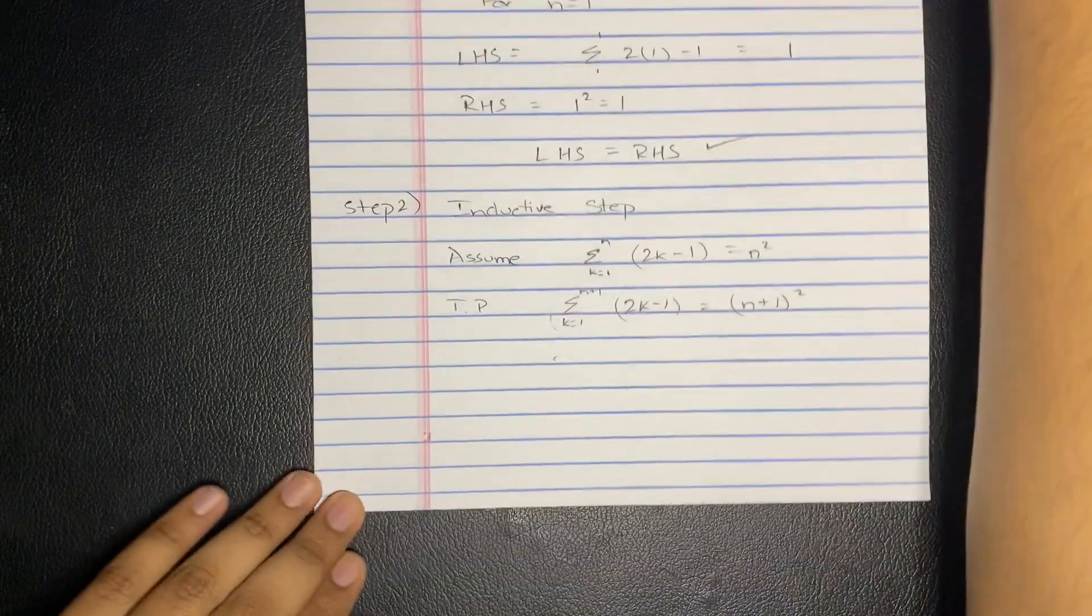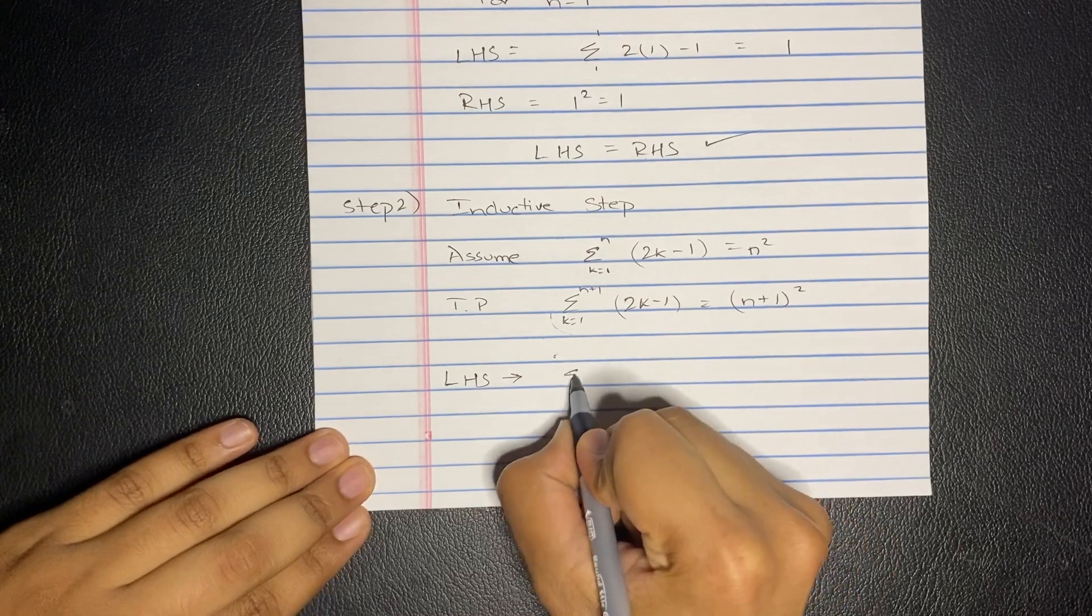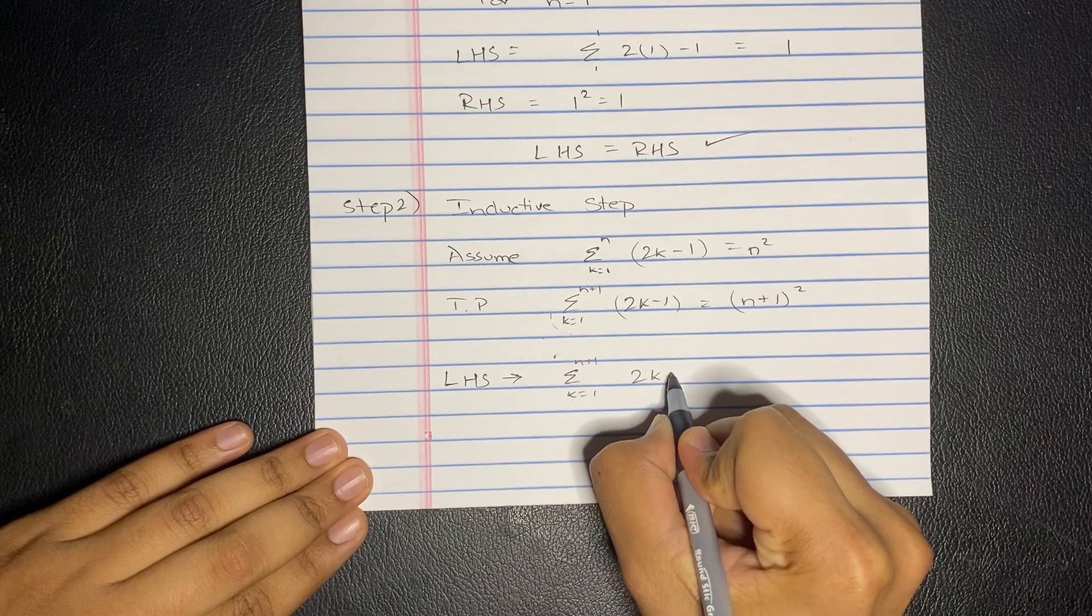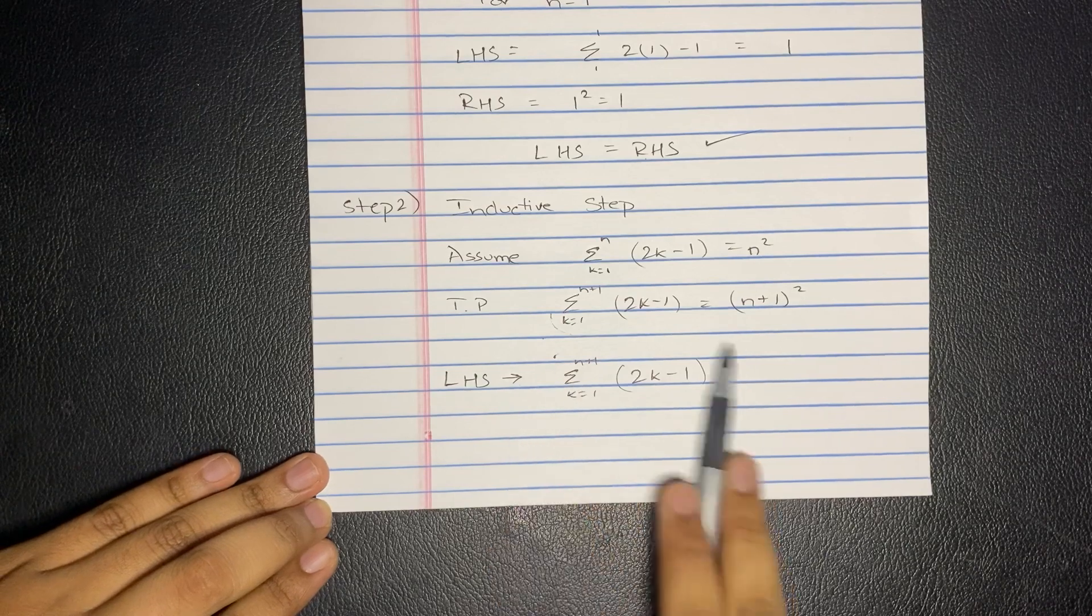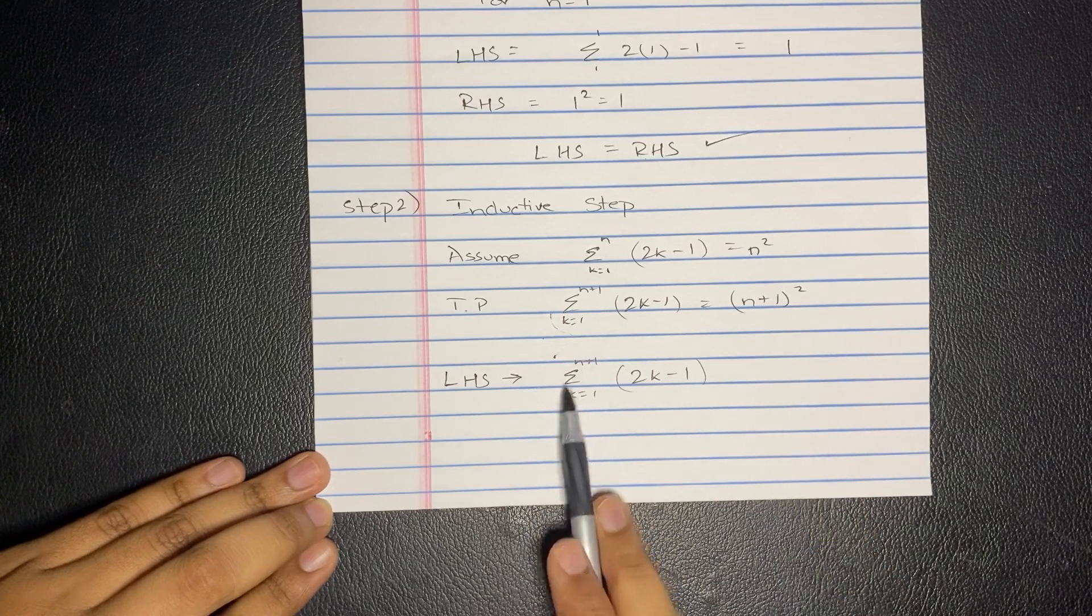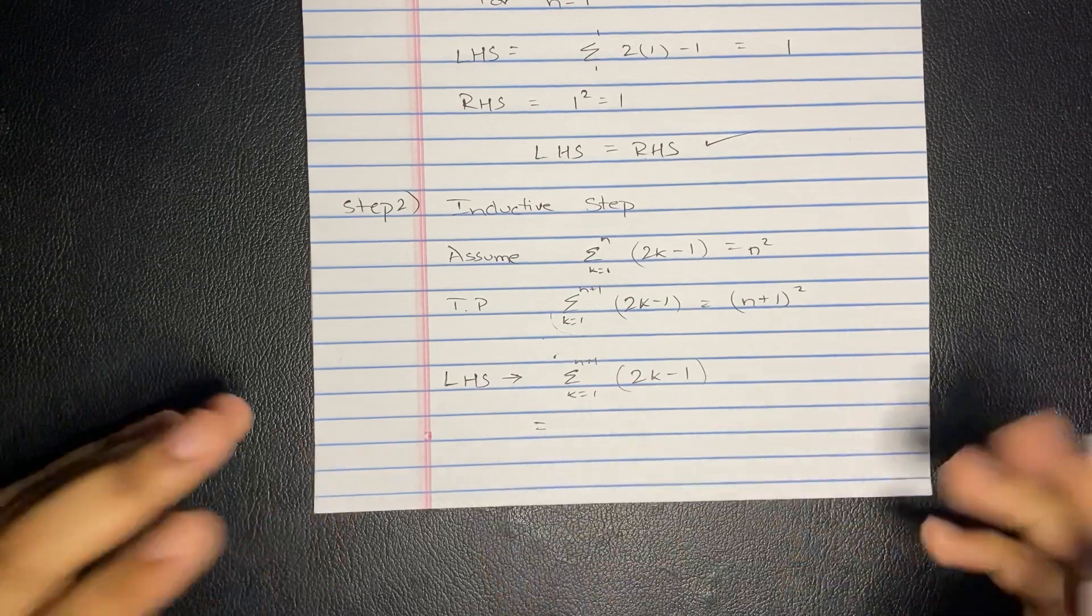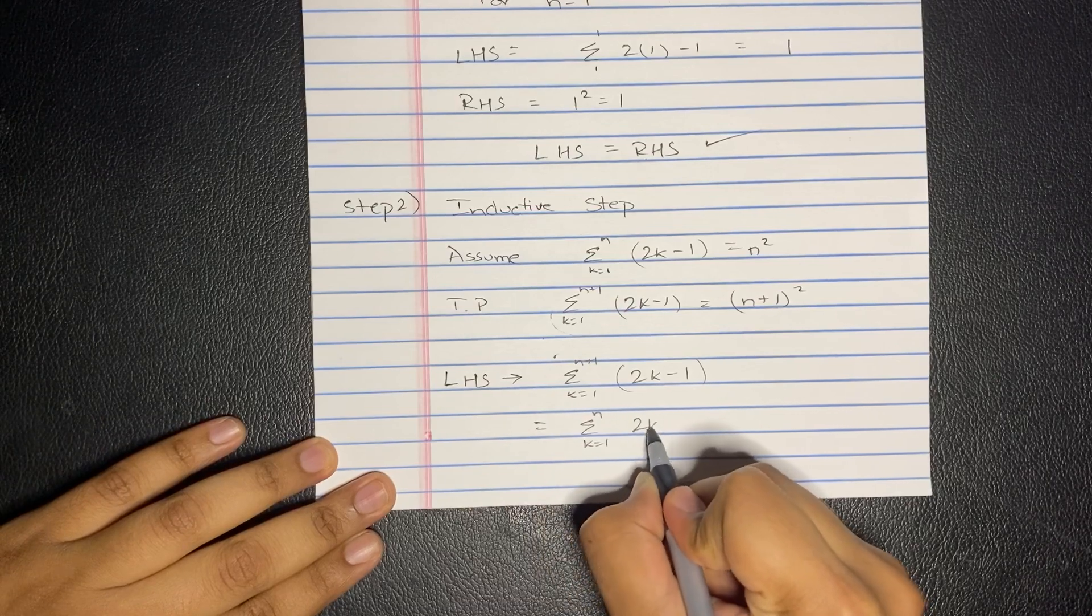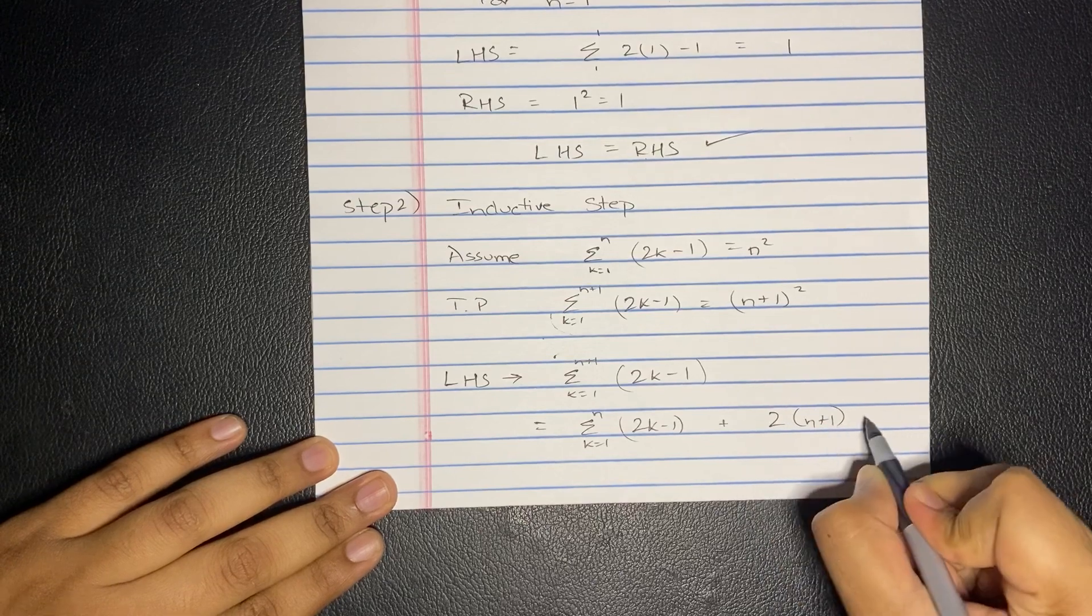So we're actually going to take the LHS, left-hand side. We have summation from k equals 1 to n plus 1, 2k minus 1. And actually what we're going to do is we're going to separate this into all the way from 1 to n, and then add on, because this is a summation series, we're going to add on the n plus 1 factor later on.